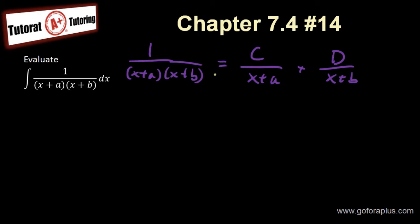So if you want to have the common denominator, you have to multiply it out, so I get 1 equals c times (x+b) plus d times (x+a). This is how we do partial fraction to find out what is the value of c and d.